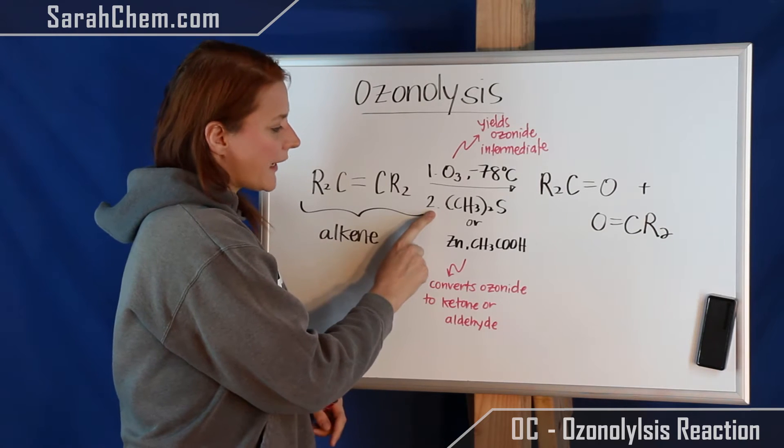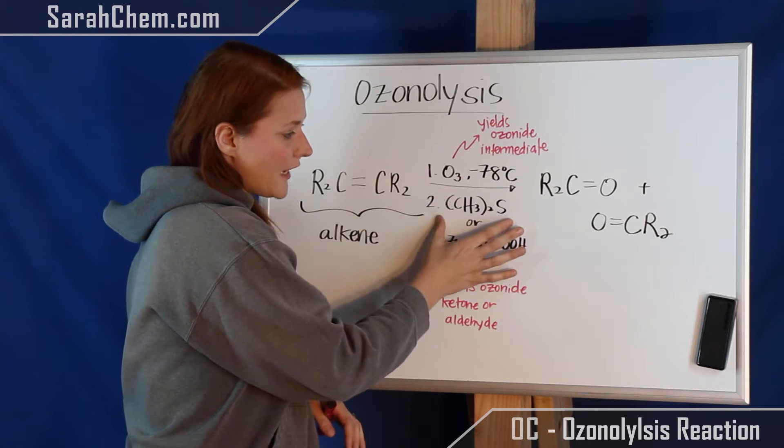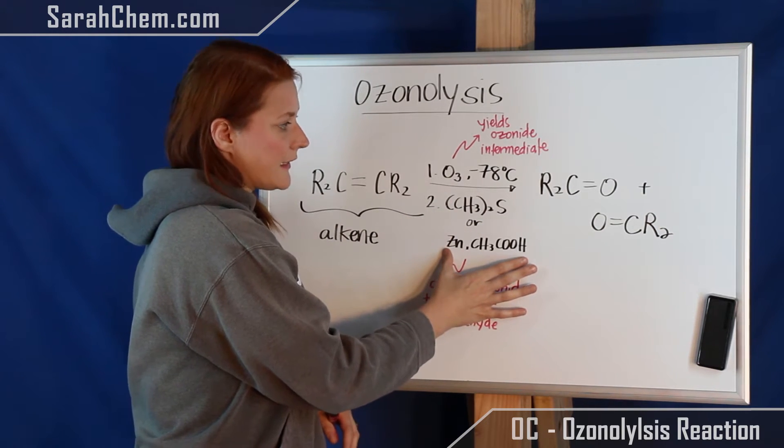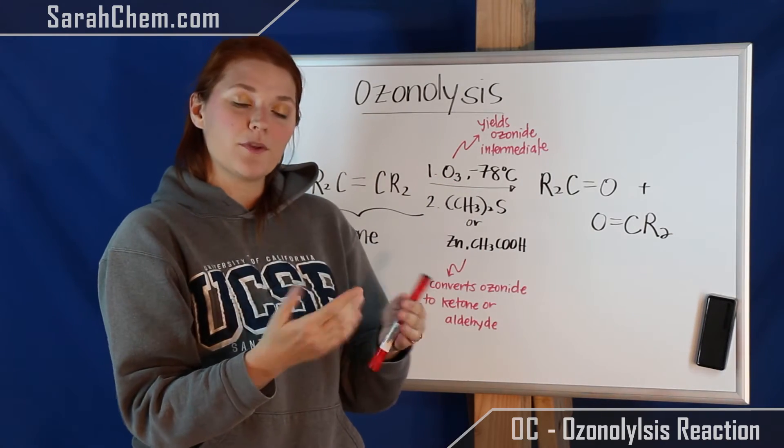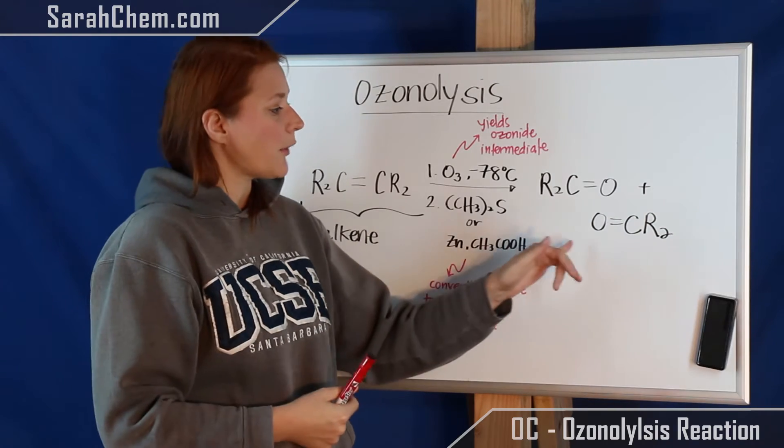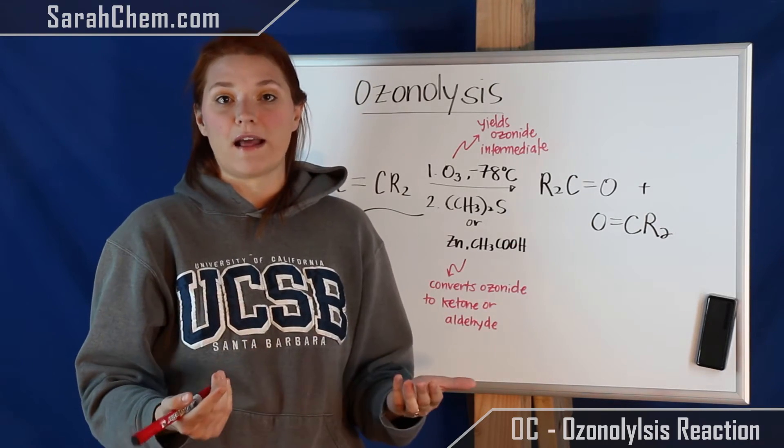Instead what happens is we have the second component here - either the dimethyl sulfide or the zinc in acetic acid - and one of those two is going to react with that ozonide that we formed to immediately convert it into our final product, which is a ketone or an aldehyde.